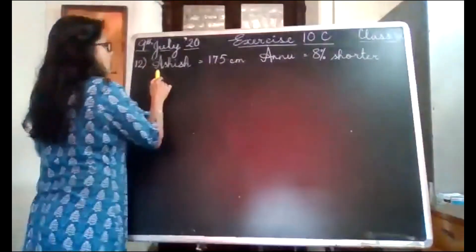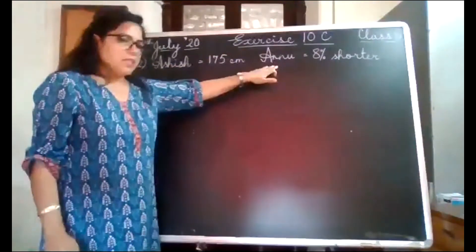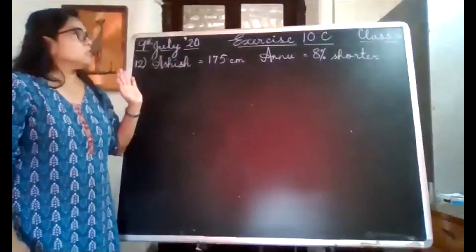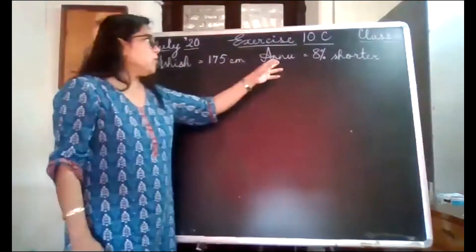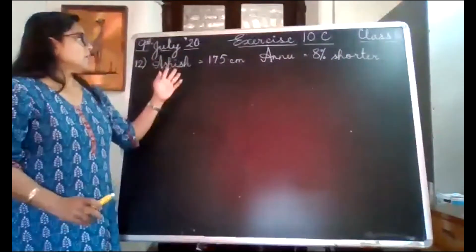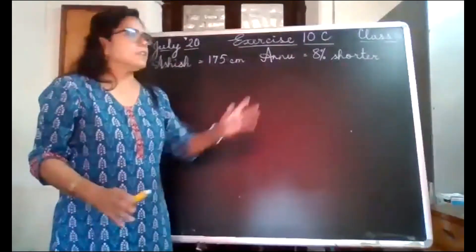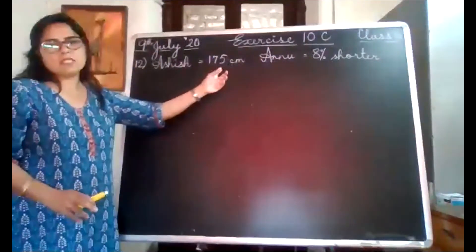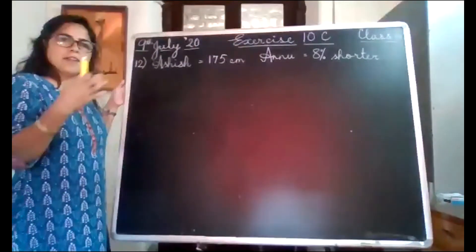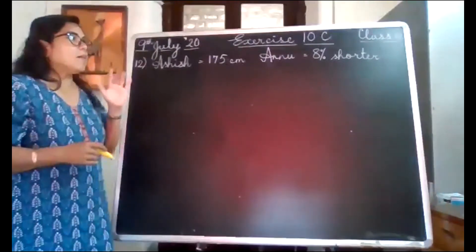Ashish's height is given in centimeters and they are telling us that Anu is 8% shorter than Ashish. First of all, if they said that Anu is 5 cm shorter than Ashish, then it would have been very easy. We would simply subtract the 5 cm from this and we would get Anu's height. But those type of questions have already been asked in the lower classes, wherein directly the number was given.